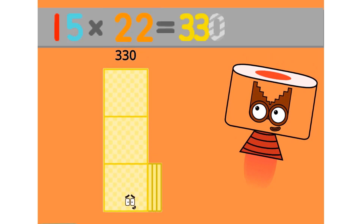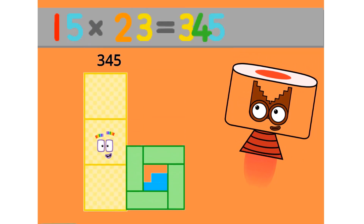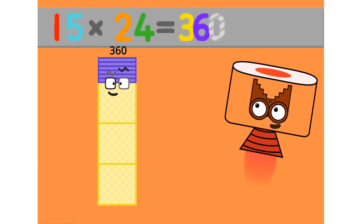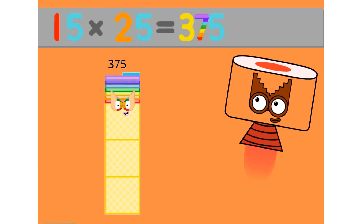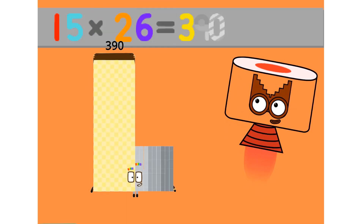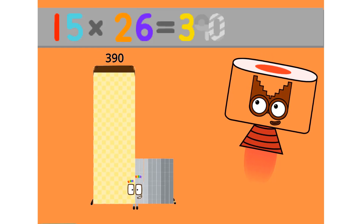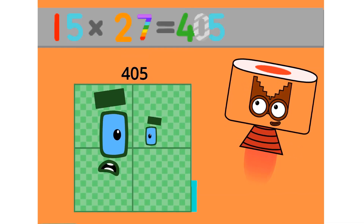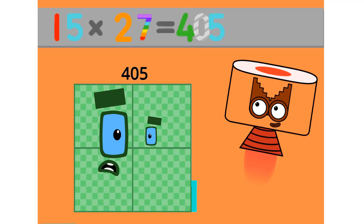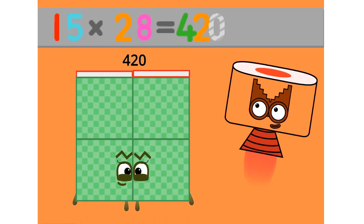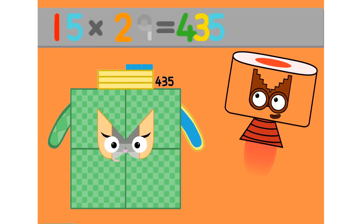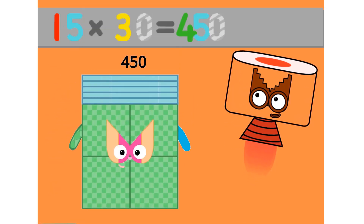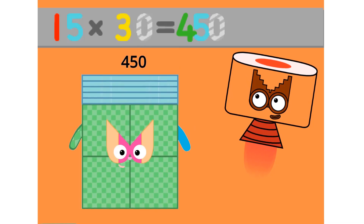15 times 22 equals 330. 15 times 23 equals 345. 15 times 24 equals 360. 15 times 25 equals 375. 15 times 26 equals 390. 15 times 27 equals 405. 15 times 28 equals 420. 15 times 29 equals 435. 15 times 30 equals 450.